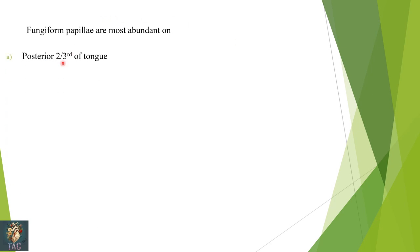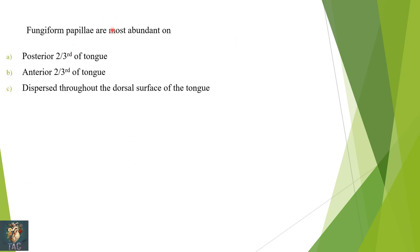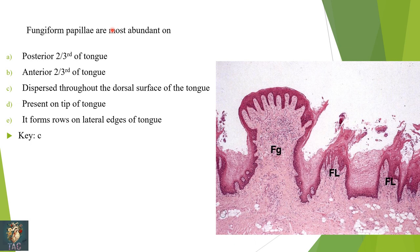Next: fungiform papillae are present — most abundant on posterior third, anterior third, dispersed throughout the dorsal surface, on tip of tongue, or forming rows on lateral edges? This is slightly confusing as the options are similar to the previous question on foliate papillae. Remember: foliate papillae form rows on lateral edges, while fungiform papillae are scattered on the dorsum of the tongue in between filiform papillae. You can even see fungiform papillae as red spots on naked eye examination. Correct option is C.